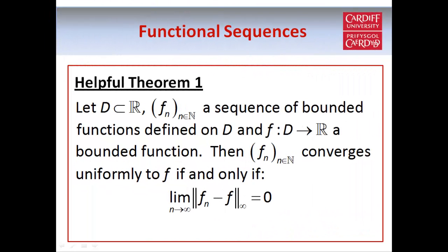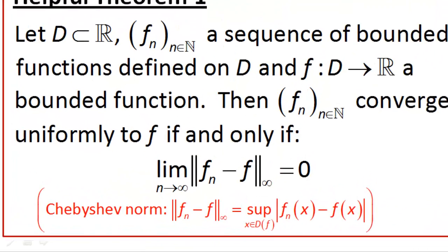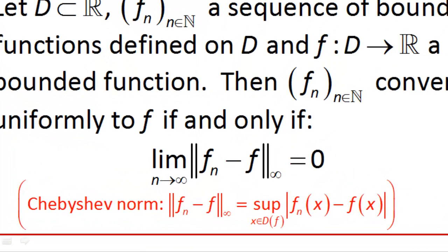In analysis it's important to bear in mind that theorems are there to help us rather than confuse us. That's why I've called this theorem Helpful Theorem 1. It states that if we have a sequence of bounded functions fn defined on some interval, and f is also a bounded function, then the sequence is uniformly convergent if and only if the Chebyshev norm of fn minus f tends to zero as n tends to infinity. The Chebyshev norm is defined as the supremum over all x in the domain of the modulus of fn(x) minus f(x).